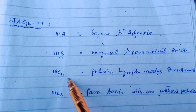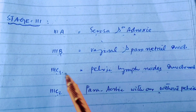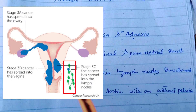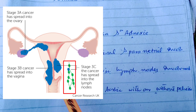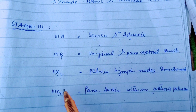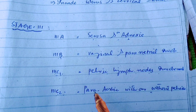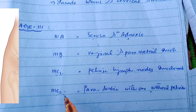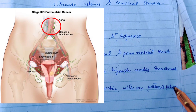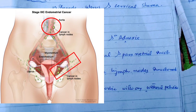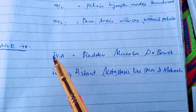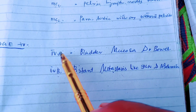Stage 3c1 is when the carcinoma involves the pelvic lymph nodes. Stage 3c2 is when the endometrial carcinoma spreads to the para-aortic lymph nodes, with or without involvement of the pelvic lymph nodes.